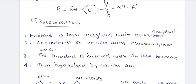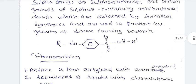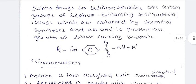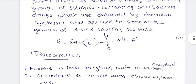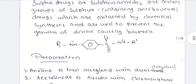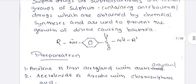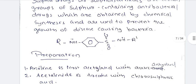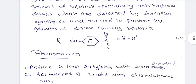There are three steps in the preparation of sulfa drugs. Sulfa drugs are sulfonamides — antibacterial drugs formed by chemical synthesis, which are used against bacterial infections.